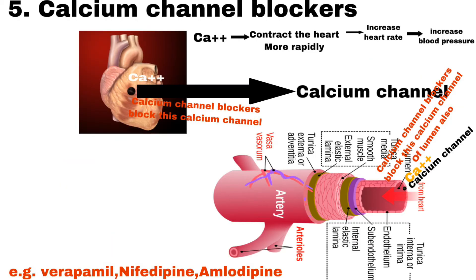Number 5 is Calcium Channel Blockers. In our body, calcium channels are present in cardiac muscle as well as the lumen of blood vessels. In cardiac muscle, if the calcium channel is open, there will be an increase in intracellular calcium, contracting the heart more rapidly. Because of that, heart rate increases and cardiac output increases, leading to an increase in blood pressure. Blocking of this calcium channel can reduce the heart rate and cardiac output, hence reducing blood pressure.